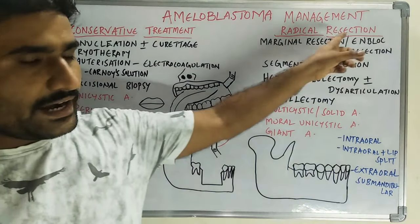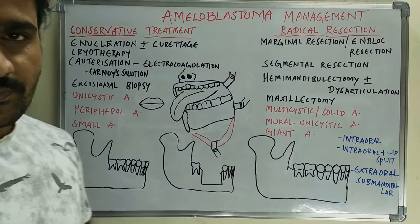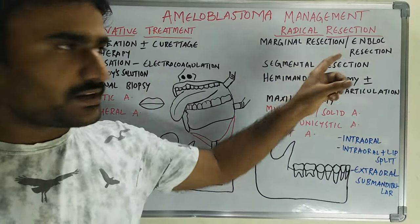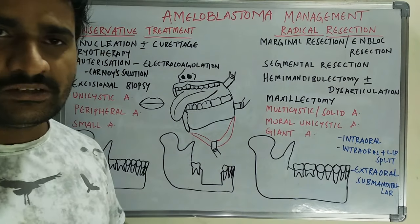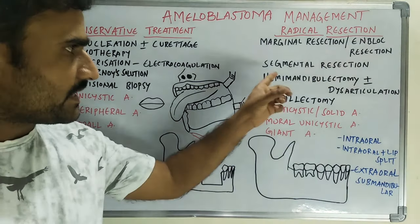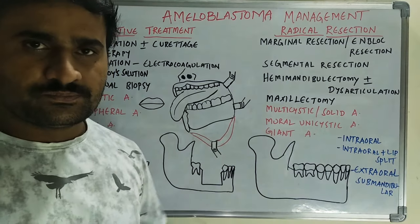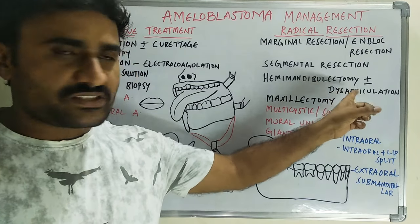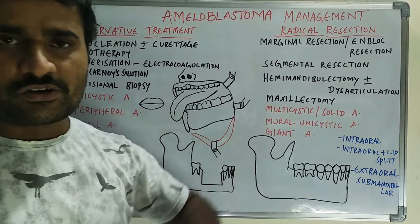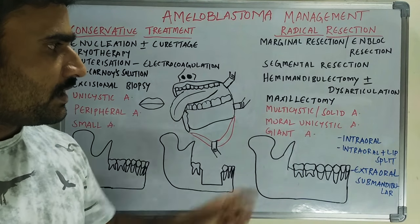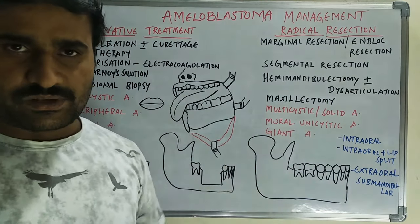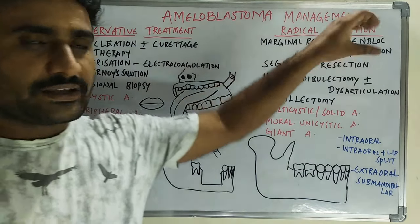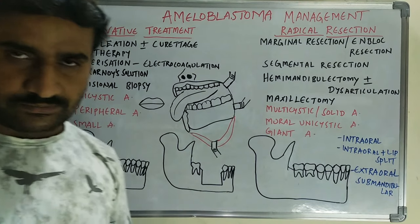Coming to radical resection, we may go for marginal resection or en-block resection, and segmental resection or hemimandibulectomy, plus or minus disarticulation, and maxillectomy. These are the options available in radical resection.